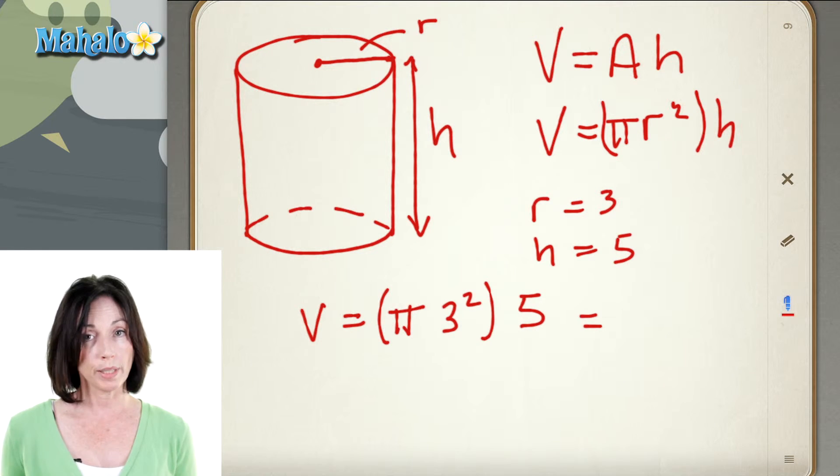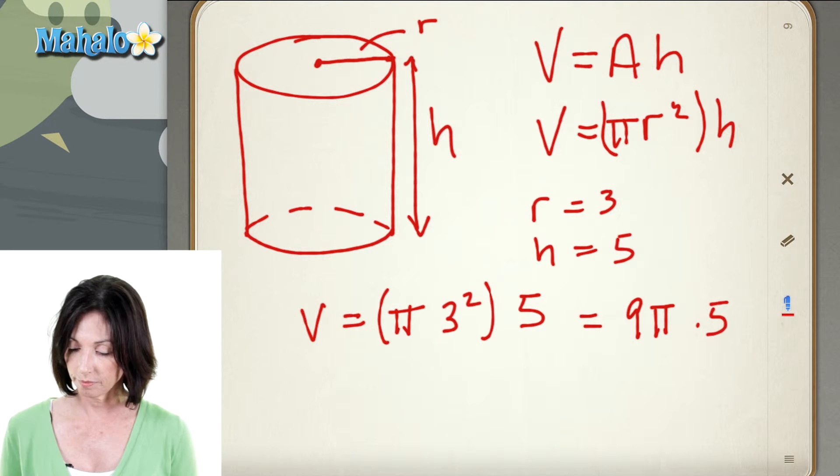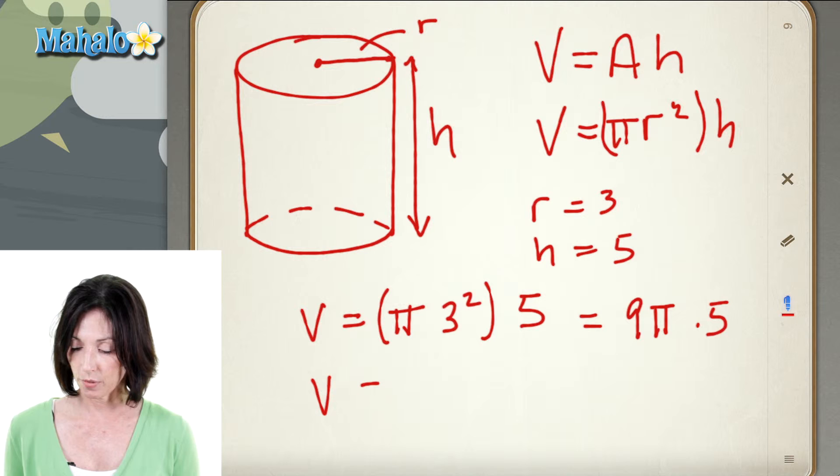Okay, so three squared is nine, so we have nine pi times five, and nine times five is 45, so the volume of the cylinder is 45 pi.